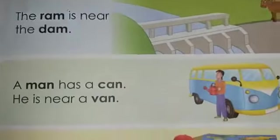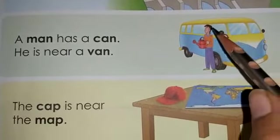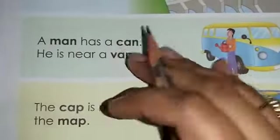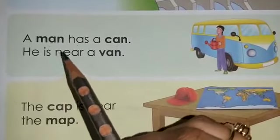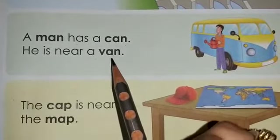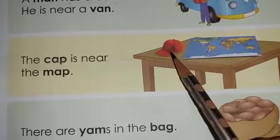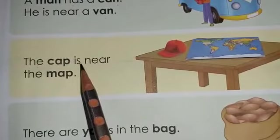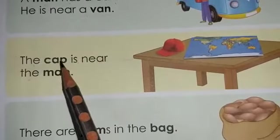Now let's come up to the next one. What do you see in this picture? There is a man and he is standing near a van and he has a can in his hand. So, a man has a can. He is near a van. Man, can, van. Now let's come up to the next one. What do you see? There is a cap and this is a map. So the cap is near the map. Cap and map.